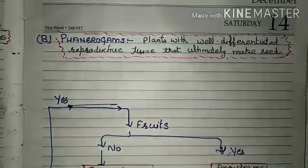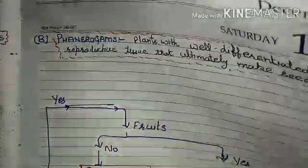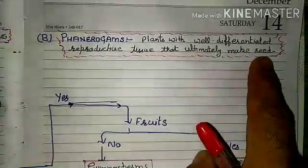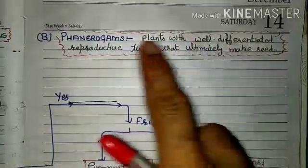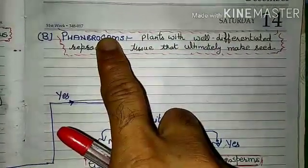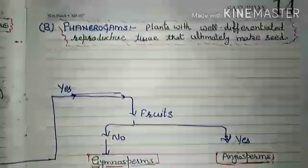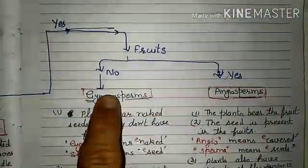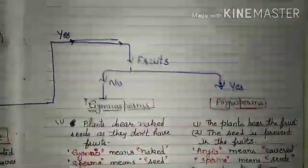Phanerogamia refers to plants in which the reproductive tissues are very well developed and these plants produce seeds. Phanerogamia is further divided into two parts: Gymnosperm and Angiosperm.